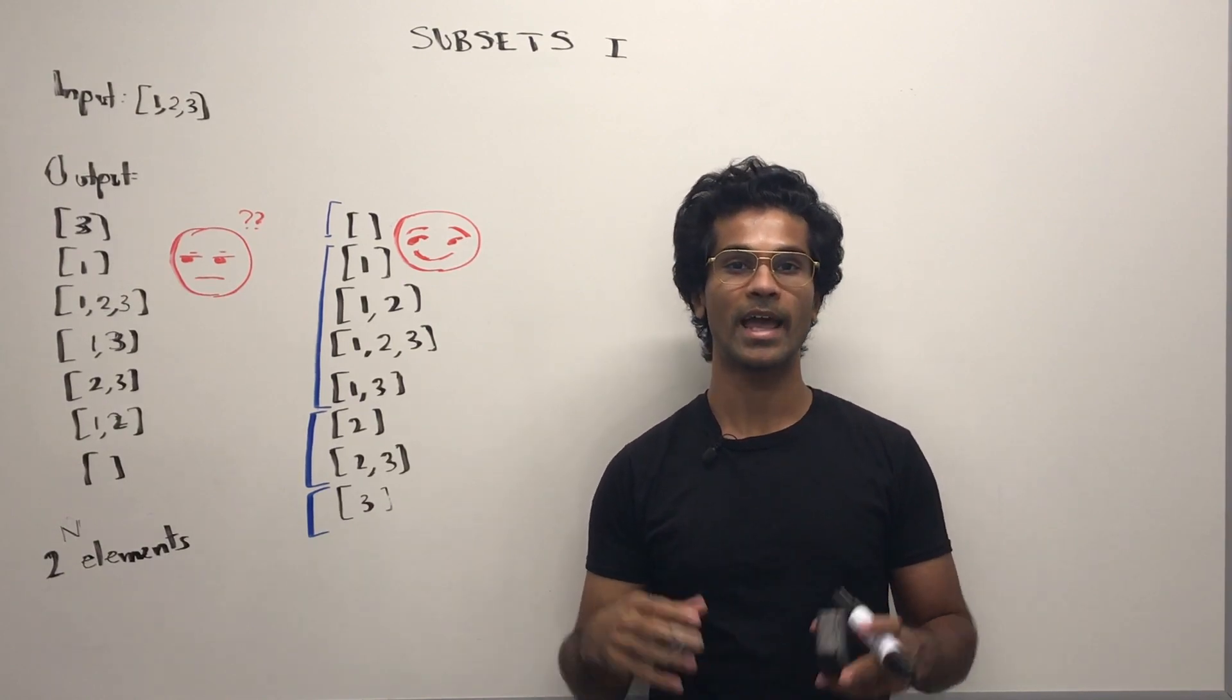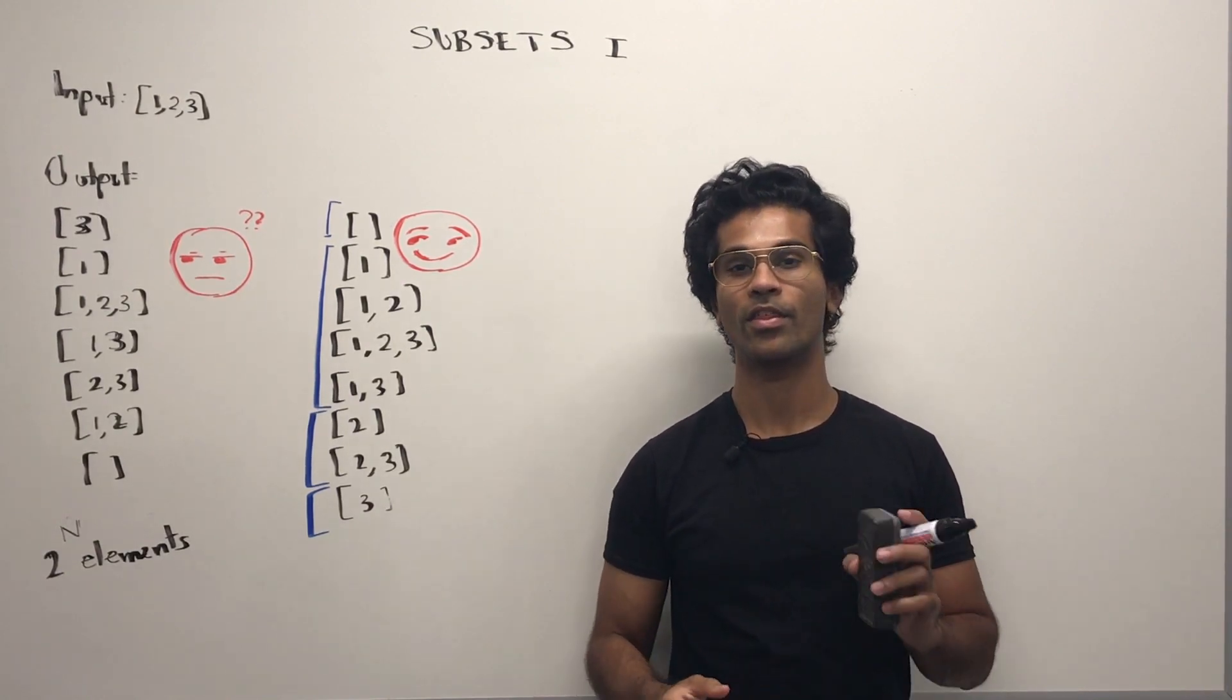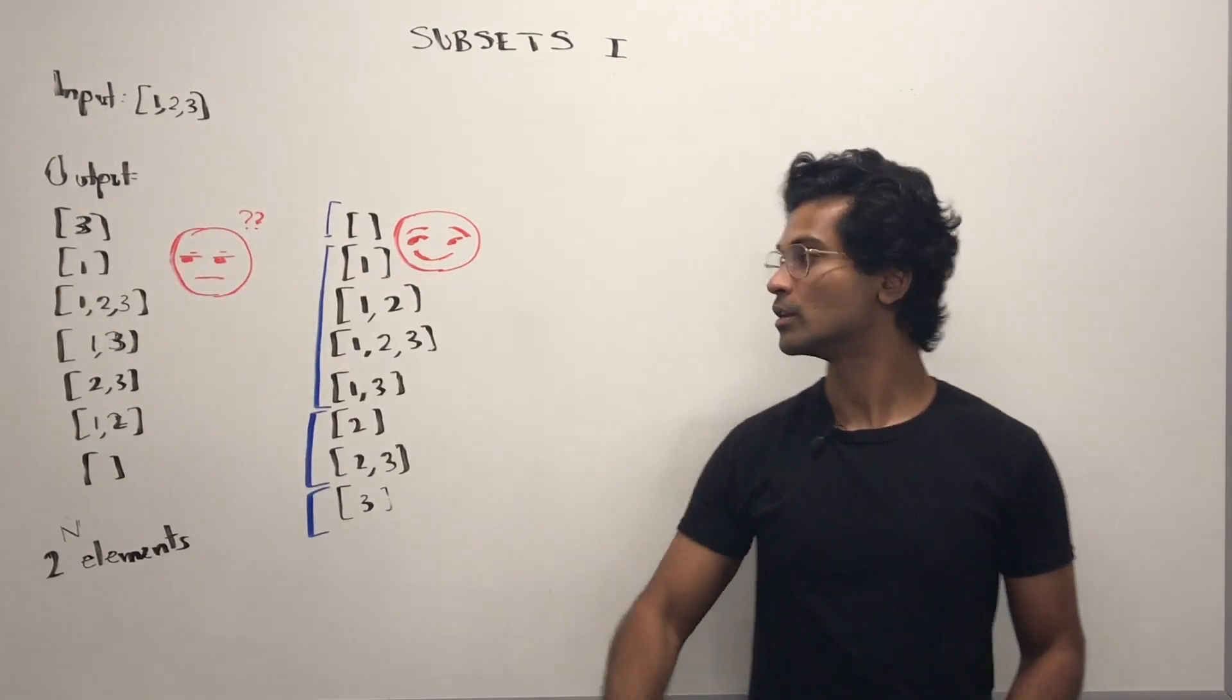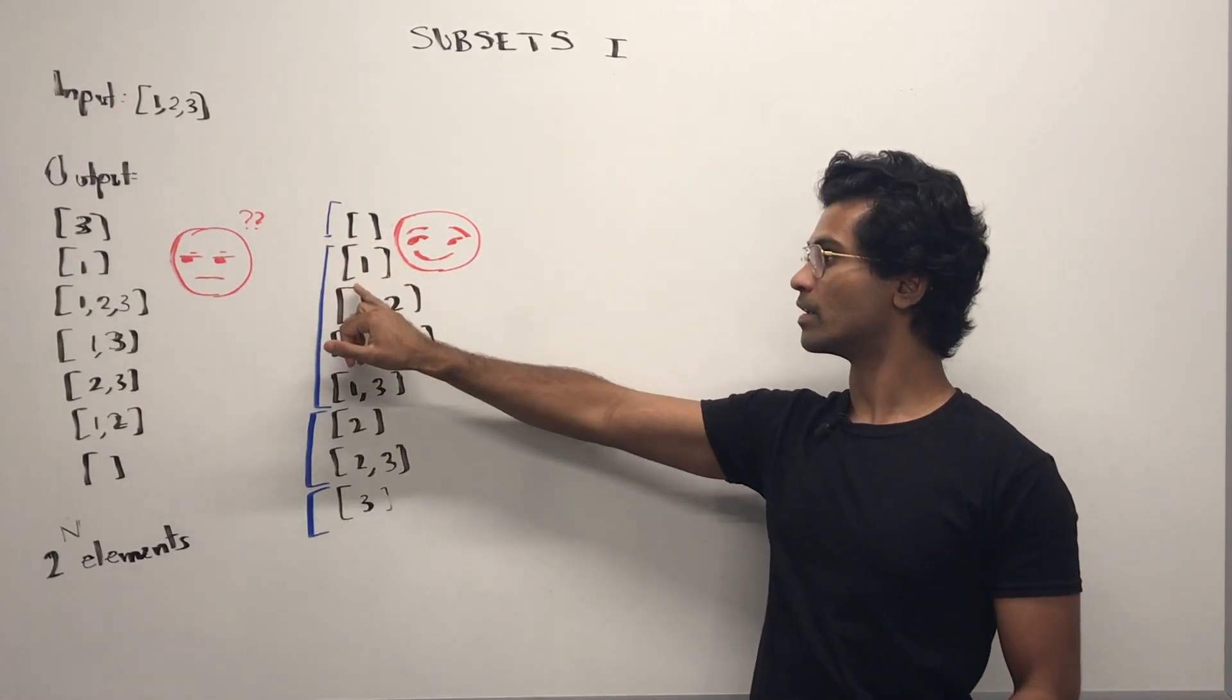First, I would take an empty set. Then I would add the first element. So far we have empty and then we have one.